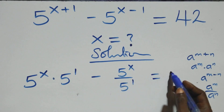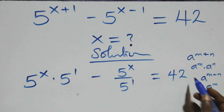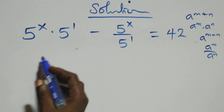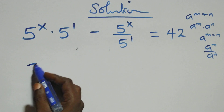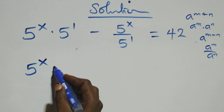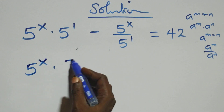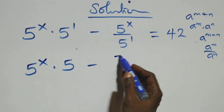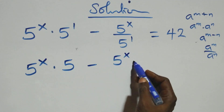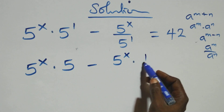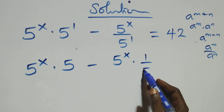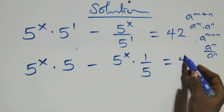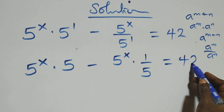Then equals to 42 on this side. So this is the same thing as 5 raised to power x times 5 raised to power 1, that's 5. Here also we can write it as 5 raised to power x times 1 over 5 raised to power 1, which is 1 over 5, equals to 42 on this side.